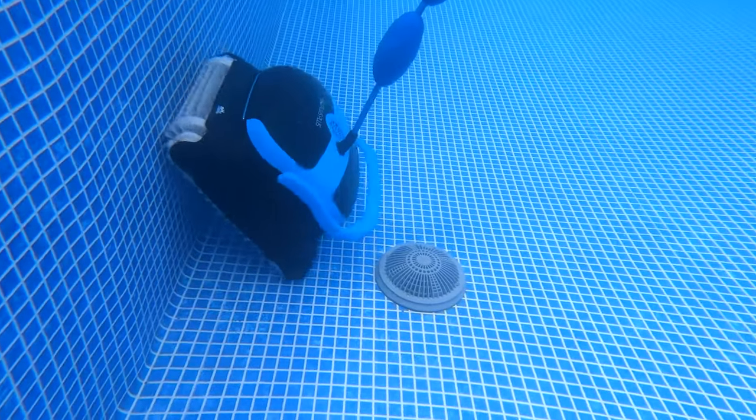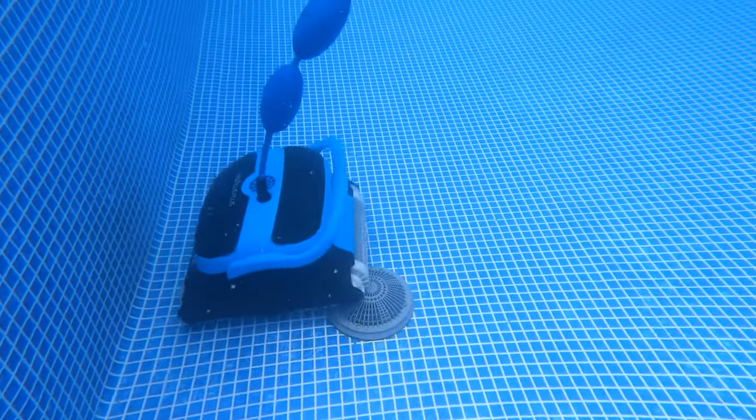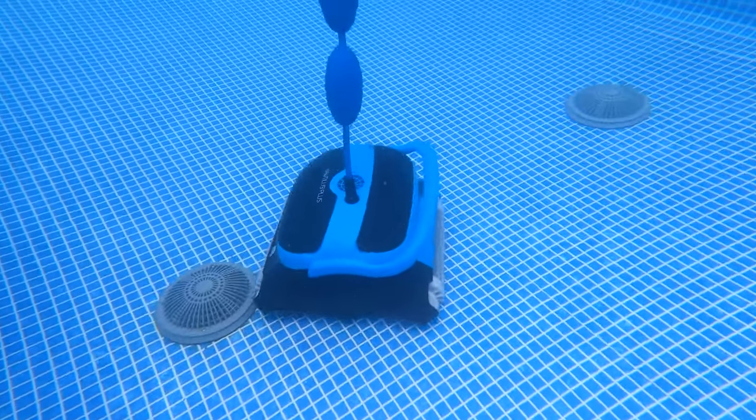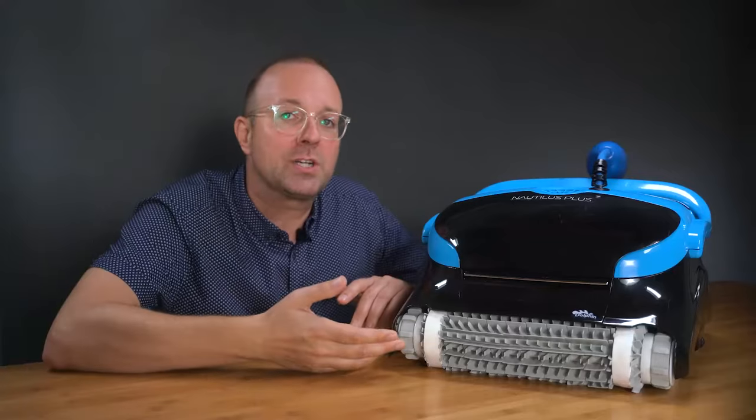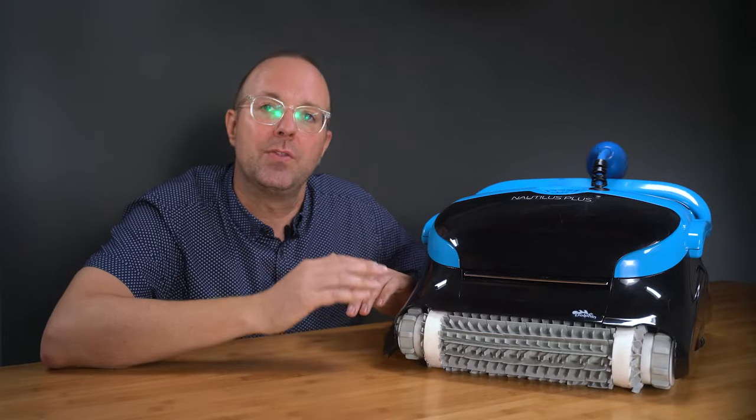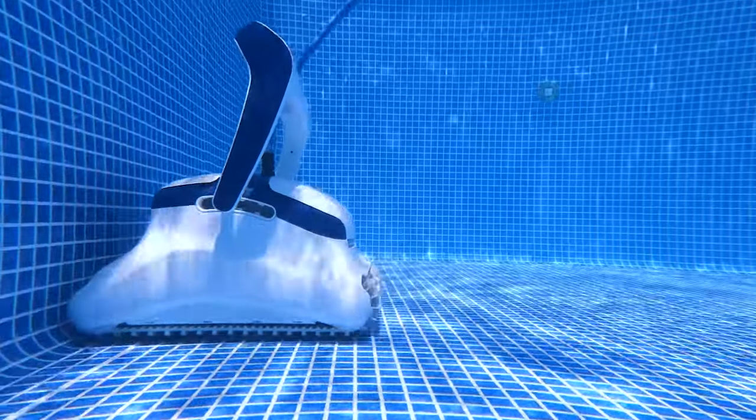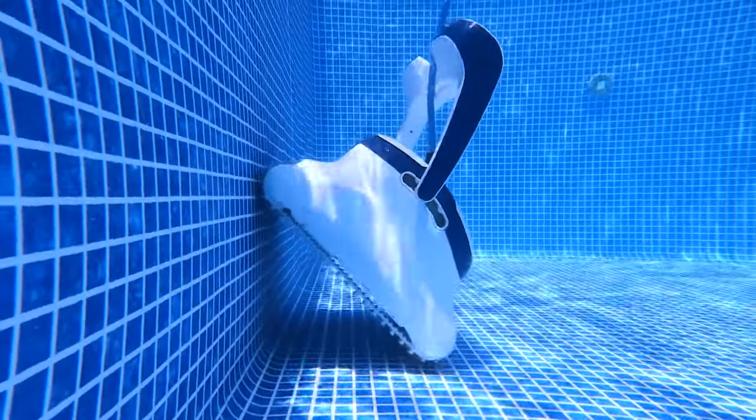In terms of cleaning performance, the CC Plus did a pretty good job, especially on the floor. I could see clean strips of pool flooring as it sucked up sand and dirt. The spinning brushes definitely help pick up debris. They're way better than an old-school pressure or suction side cleaner. But I think there's room for improvement here. If it had a gyroscope and split spinning brush like the Dolphin Sigma, the CC Plus could be way more precise underwater.